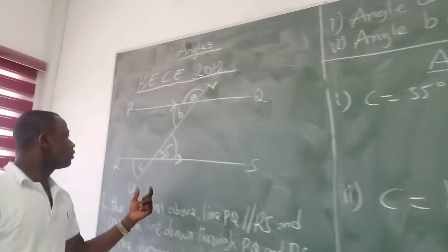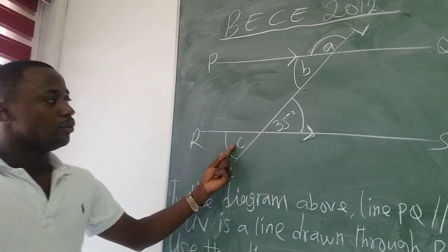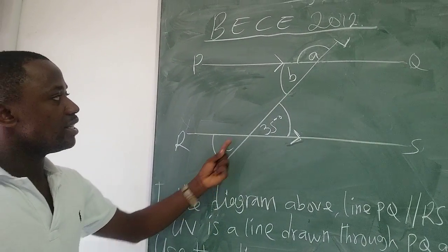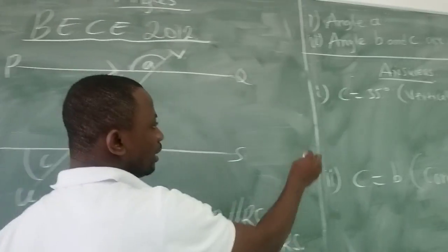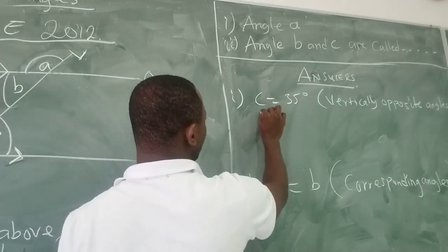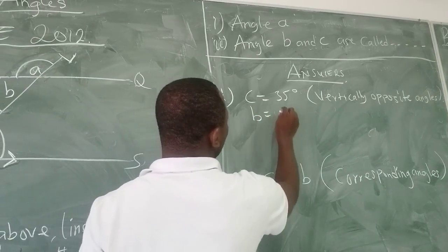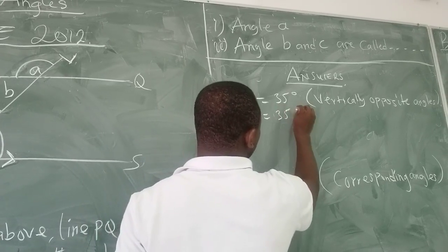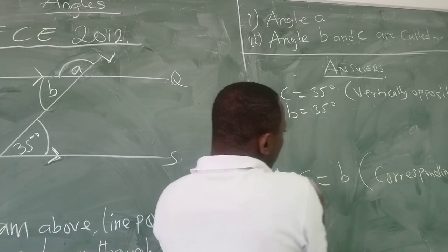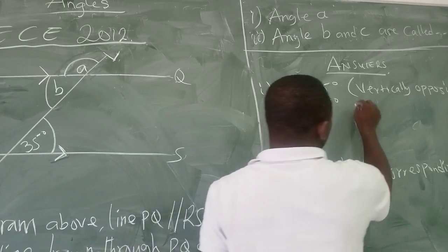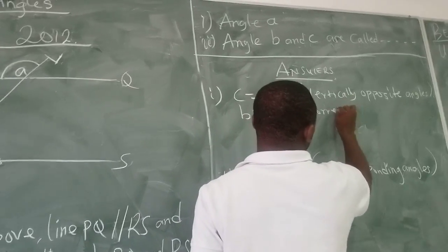Now that we know C, we can see that C is equal to B. So we can write that B is also equal to 35 degrees, because B is equal to C — corresponding angles.